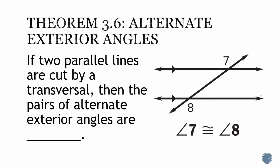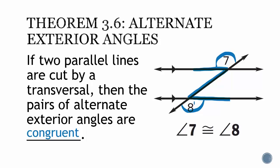Theorem 3.6, alternate exterior angles. If two parallel lines are cut by a transversal, then the pair of alternate exterior angles are congruent. Again, we draw that letter Z — this time angle 7 and angle 8 are outside the letter Z. Another way to look at it is that angle 7 and angle 8 are outside the parallel lines on opposite sides of the transversal, so the measure of angle 7 and angle 8 are equal because the angles are congruent.